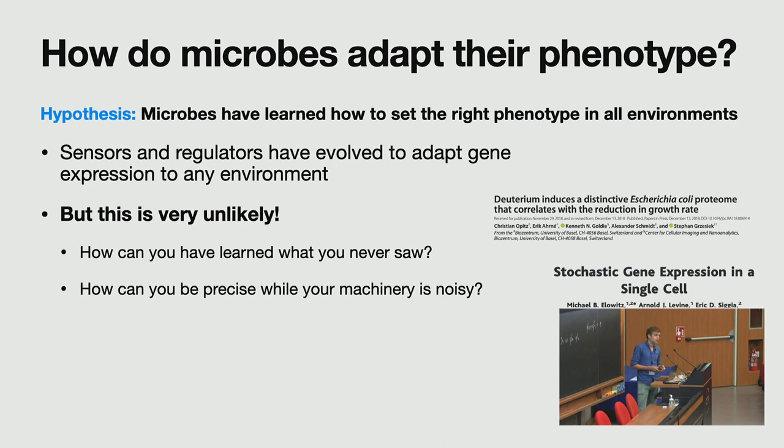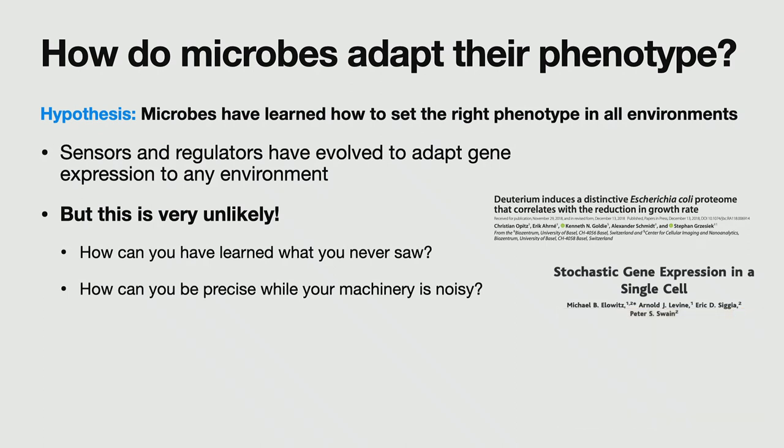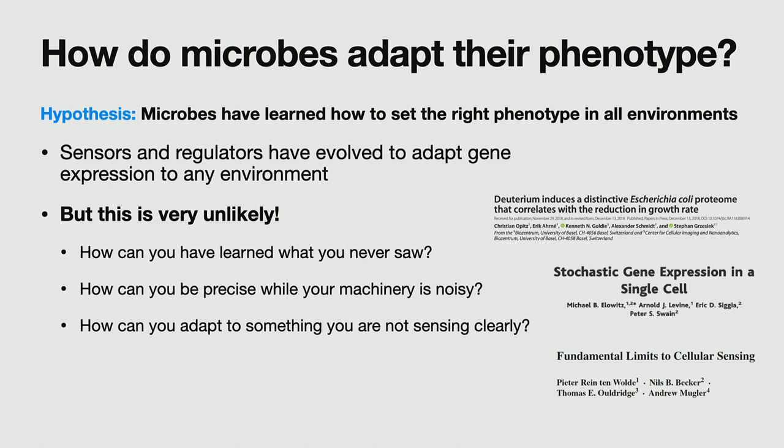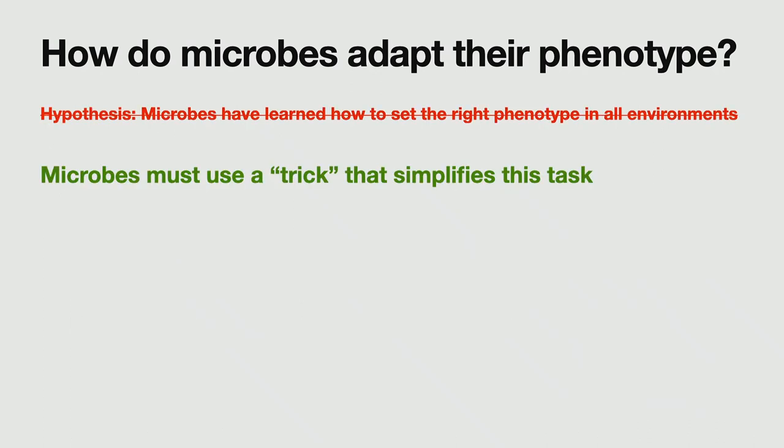At the same time, how can you be precise? We know that gene expression is very noisy. So even if you know what you have to do and you want to do that, gene expression is so noisy that you might just do a very bad approximation of that. And then last, because given the small molecule numbers in cells of transporters and sensors, we know that there's just fundamental physical limits to how much information you can gather about your environment. So it's impossible to know exactly the glucose concentration in your environment.